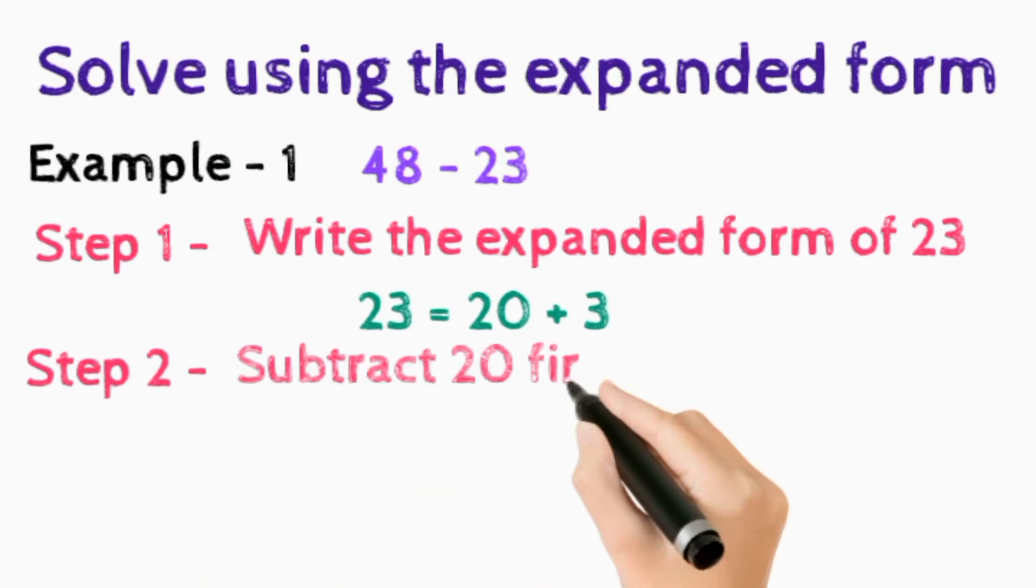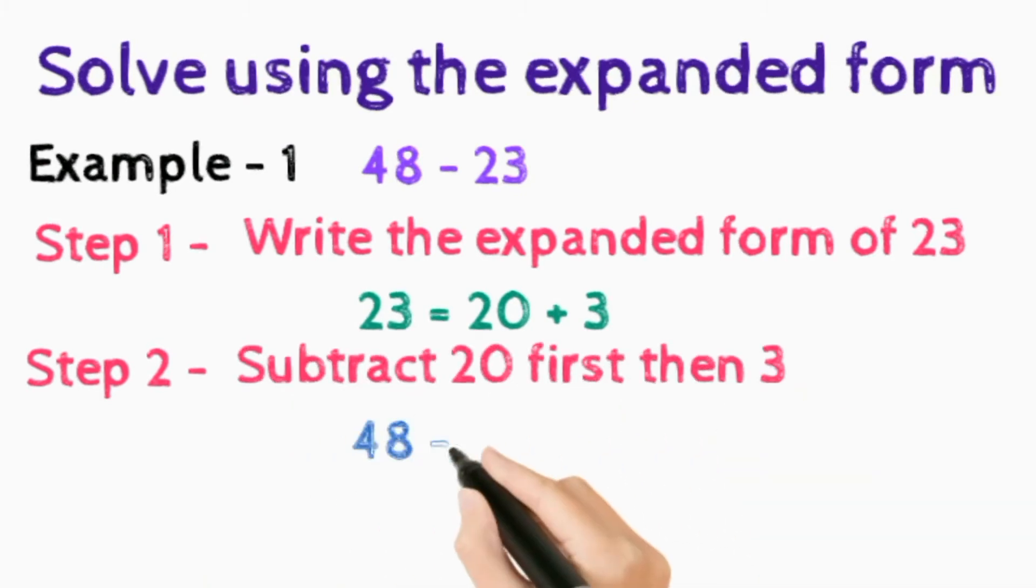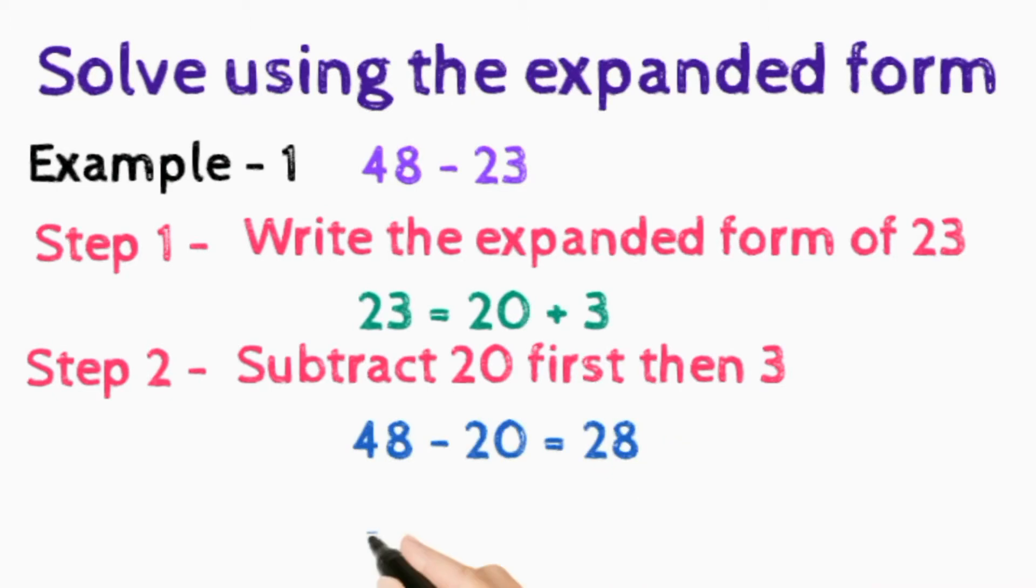In step 2, subtract 20 first then 3. So firstly we subtract 48 minus 20 is equal to 28. Now what we do, we have to write 28 from left side.